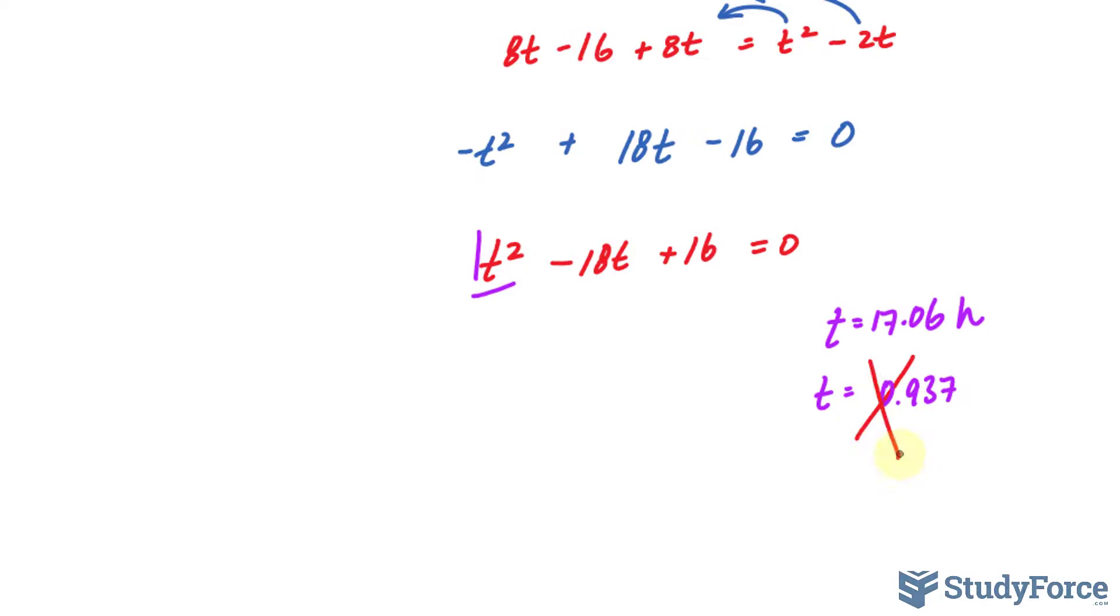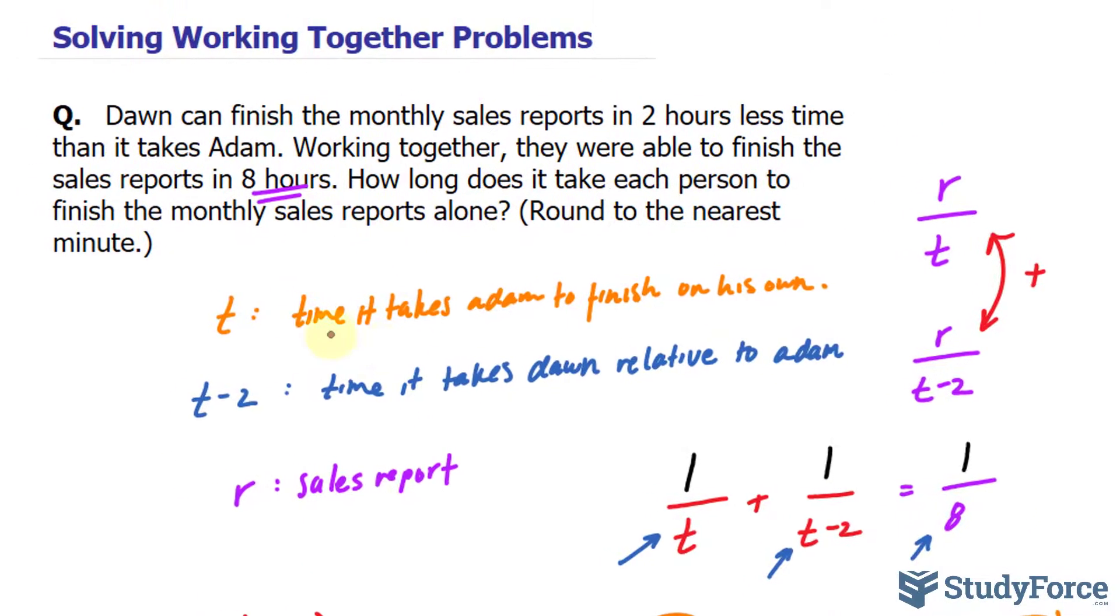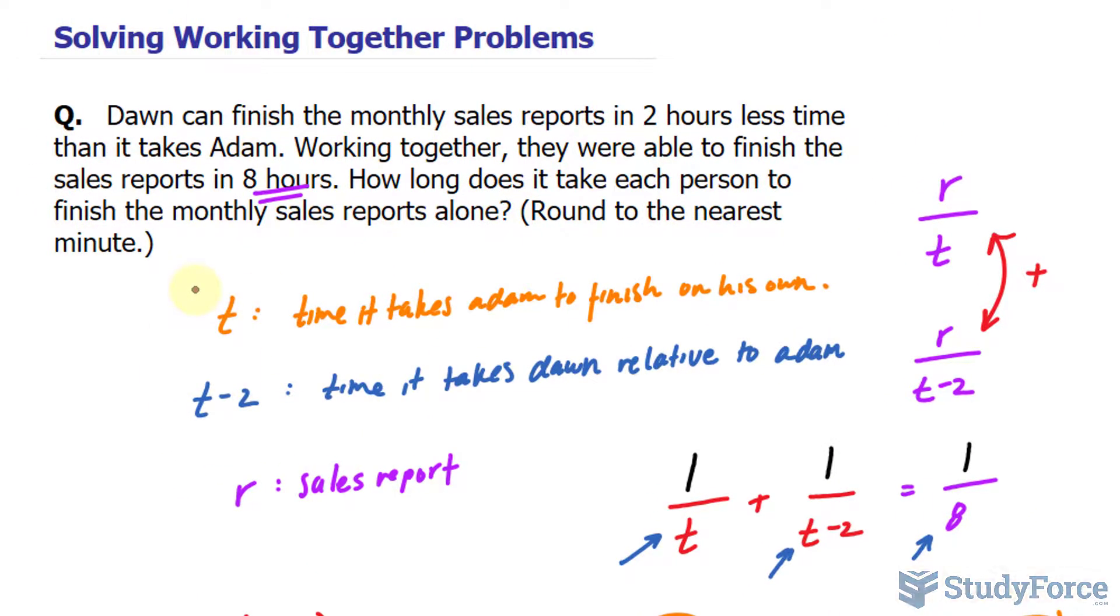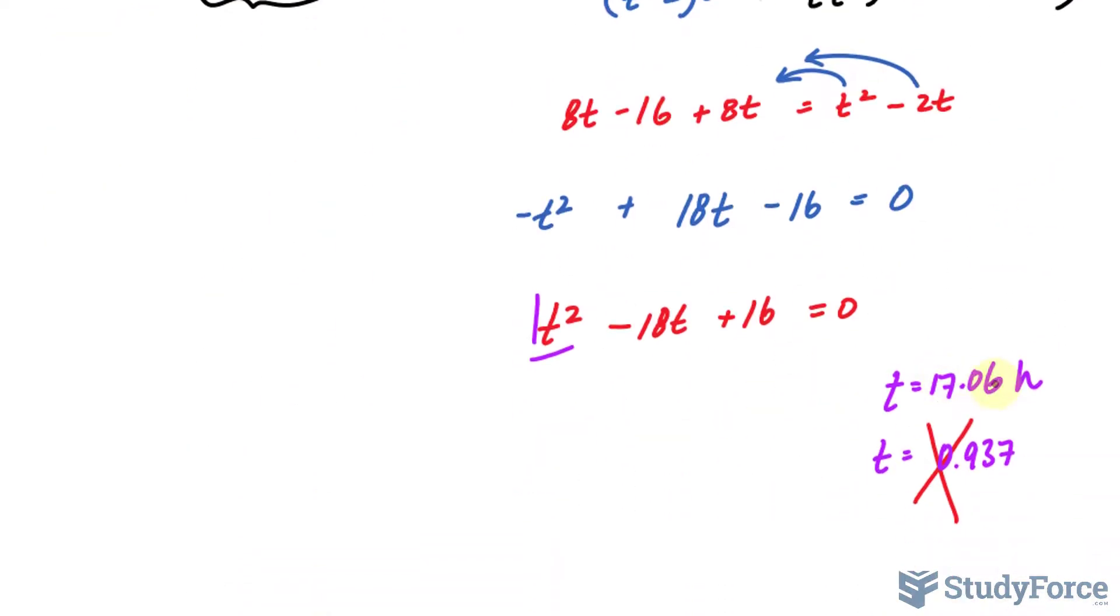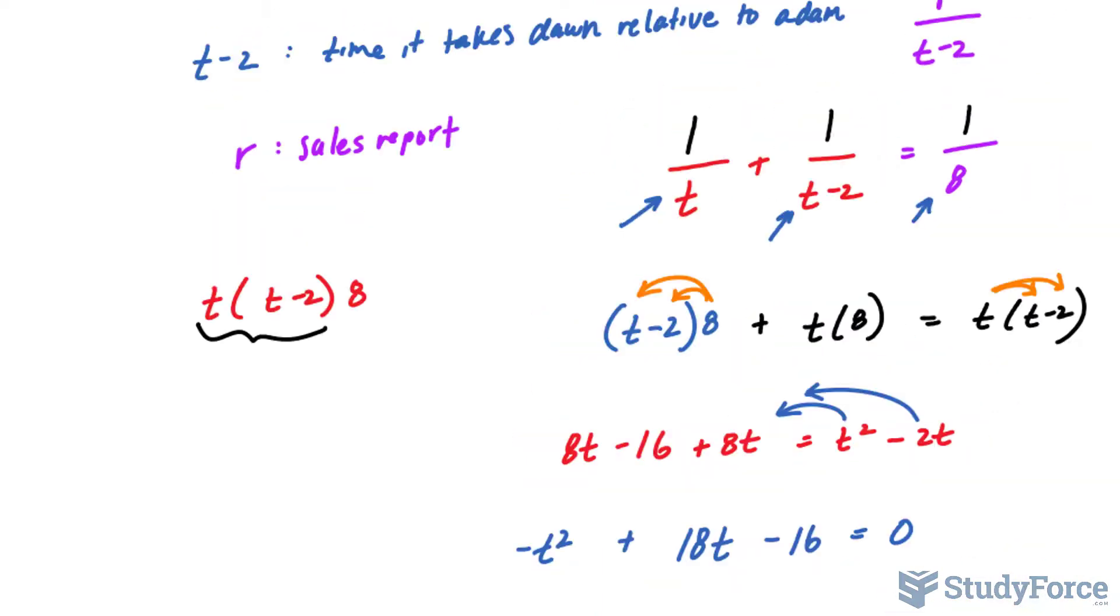I'm going to scrap the second solution because it's not consistent with what we set these as. For example, I said Adam is t, the time it takes Adam to finish his work. So if we say it takes him 0.93 hours, for example, then Dawn would be 0.93 minus two, and that's a negative number and it doesn't make sense. That's why we'll only be using 17.06.